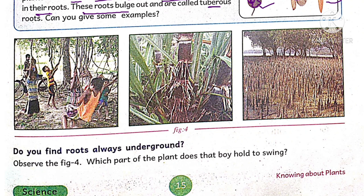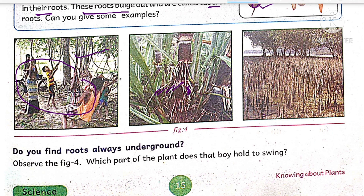Sometimes roots perform some special functions. The children are playing under the banyan tree because it has aerial roots. This sugarcane plant has lateral roots, and these roots give additional support to the plant. In mangrove plants, the roots grow in mud areas where there is no availability of oxygen, so the roots grow above the ground.